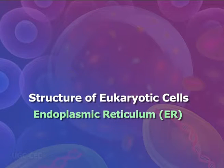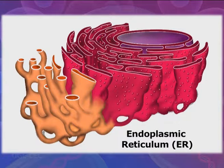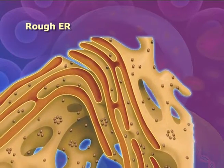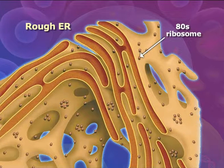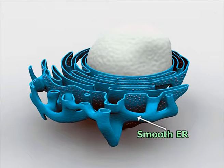The endoplasmic reticulum is a system of membranous tubules and sacs. Its primary function is to act as an internal transport system, allowing molecules to move from one part of the cell to another, and its quantity fluctuates depending on the cell's activity. The rough endoplasmic reticulum is studded with ribosomes and is the site of protein synthesis. The smooth endoplasmic reticulum is where polypeptides are converted into functional proteins and where proteins are prepared for secretion.